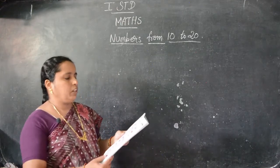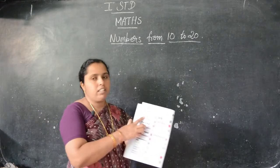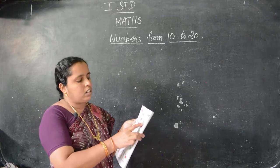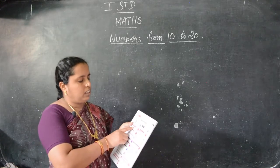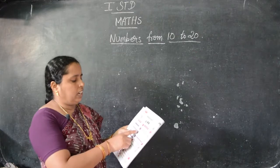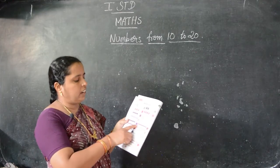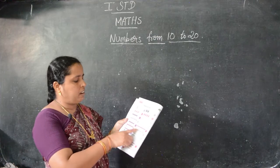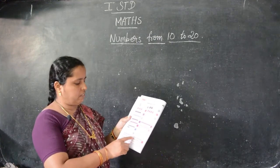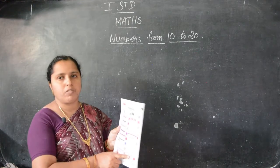In page number 18 they have given numbers 1 to 20. Here see: 1 Goa, 2 watermelon, 3 pineapples, 4 apples. Then 5, 6, 7, 8, 9, 10, 11, 12, 13, 14, 15, 16, 17, 18, 19, 20. Numbers from 1 to 20.